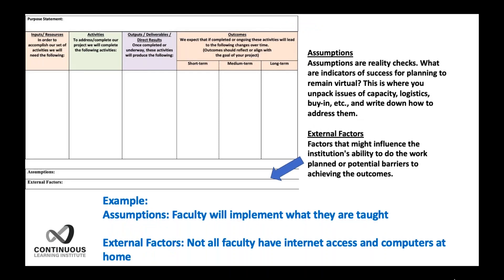Assumptions and external factors are really important. Assumptions are those reality checks — indicators of success for planning to remain virtual. This is where we list and unpack issues of capacity, logistics, and buy-in, and write down how to address them. External factors might influence the institution's ability to do the planned work or create barriers to achieving outcomes. For example, an assumption could be that faculty will implement what they are taught. An external factor could be that not all faculty have internet access and computers at home.